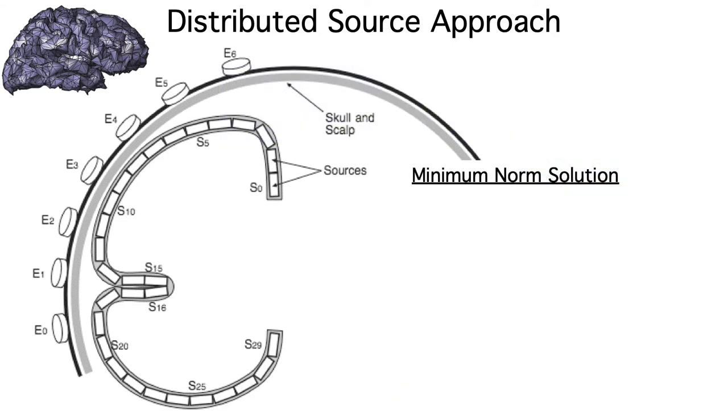One common approach is called the minimum norm. This approach solves a major problem that happens when you have patches of cortex on opposite sides of a sulcus, like sources 15 and 16 here.